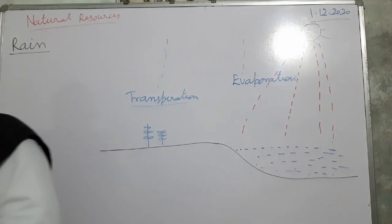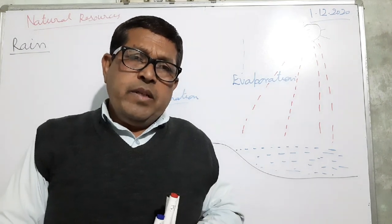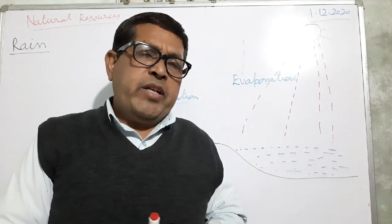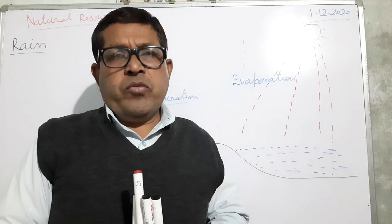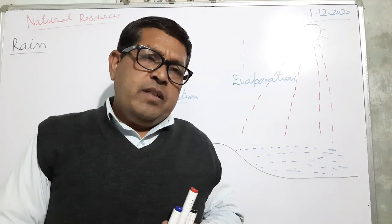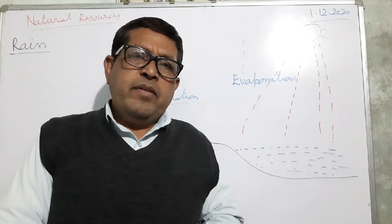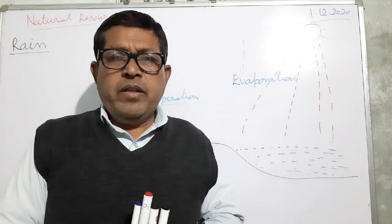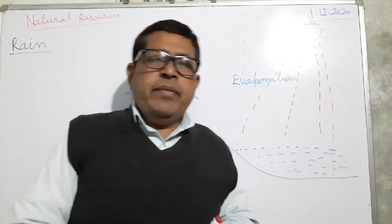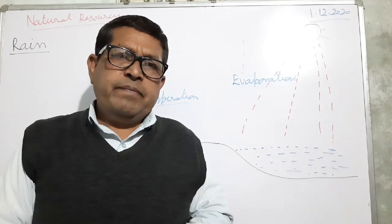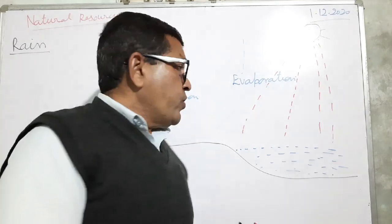These tiny droplets form an enormous collection — just like clouds. In the clouds, these droplets become more and more in size, and they become heavier than the air and come down in the form of rain.